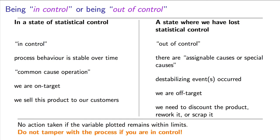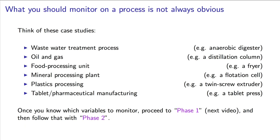One of the toughest problems that engineers face is to figure out which of the many variables available to us should be monitored. Companies have hundreds, if not thousands, of variables available to them, especially on newer plants with multiple sensors. Consider the following situations: What would you monitor if you were running a wastewater treatment process? Which variables would you monitor in an oil and gas facility? What might be of interest to track in a food processing unit or a mineral processing plant, or if you were producing plastics? What about a pharmaceutical facility — how do we know we are producing good quality product in that location?